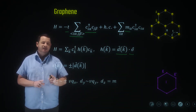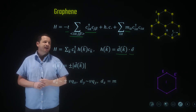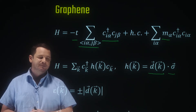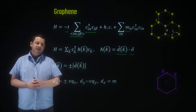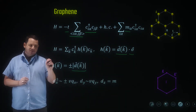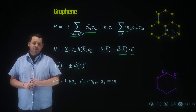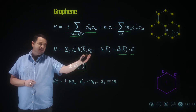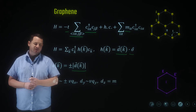These Pauli matrices act on the site basis — the A, B or I, J sites of the lattice. The spectrum related to this Hamiltonian is simply given by the magnitude of the D-vector. This D-vector vanishes at six points across the Brillouin zone. These are the locations of the Dirac bands located at the K and the K' edges of the Brillouin zone.